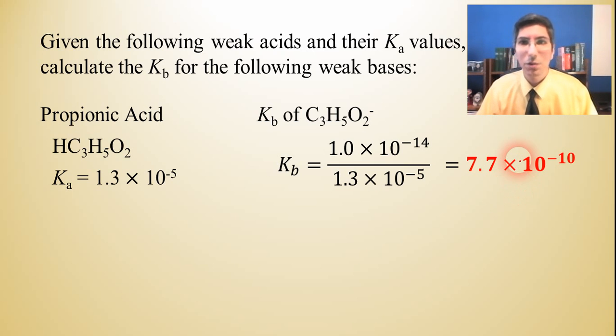So as you can see here, that's a pretty small number. That would be expected though. Propionic acid is a weak acid, but it's not the weakest acid in the world. But its conjugate base has a very weak base property to it. It has a very, very small value for Kb.